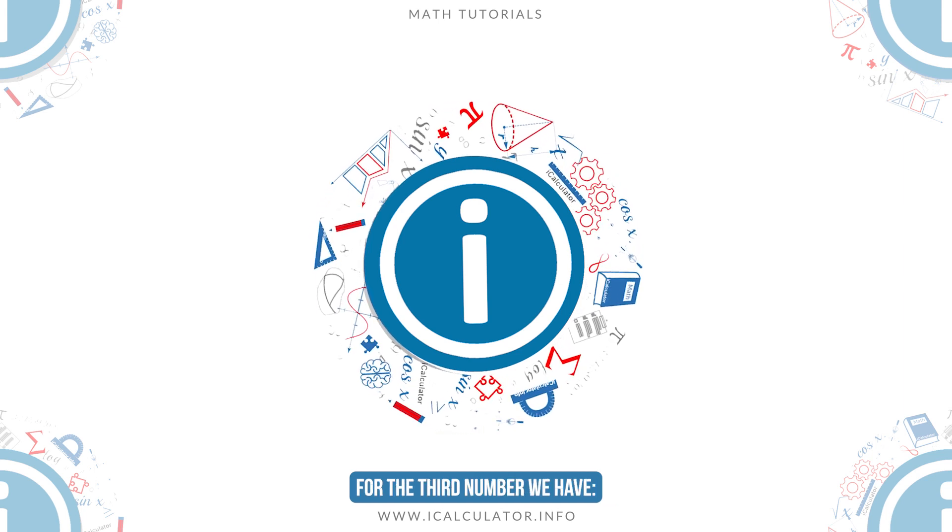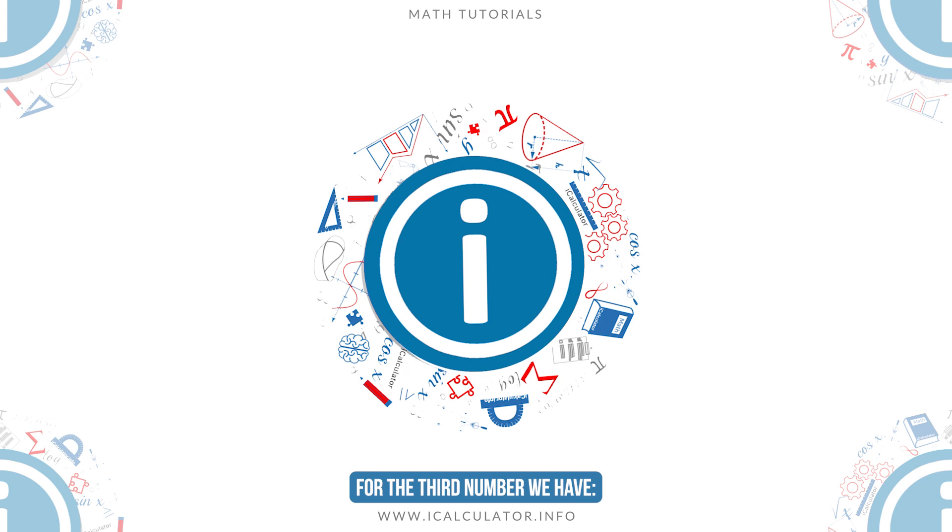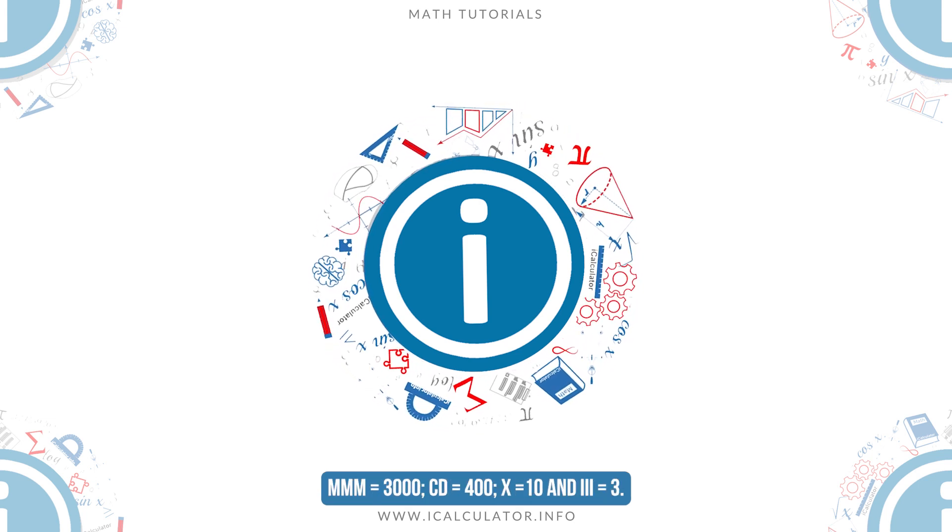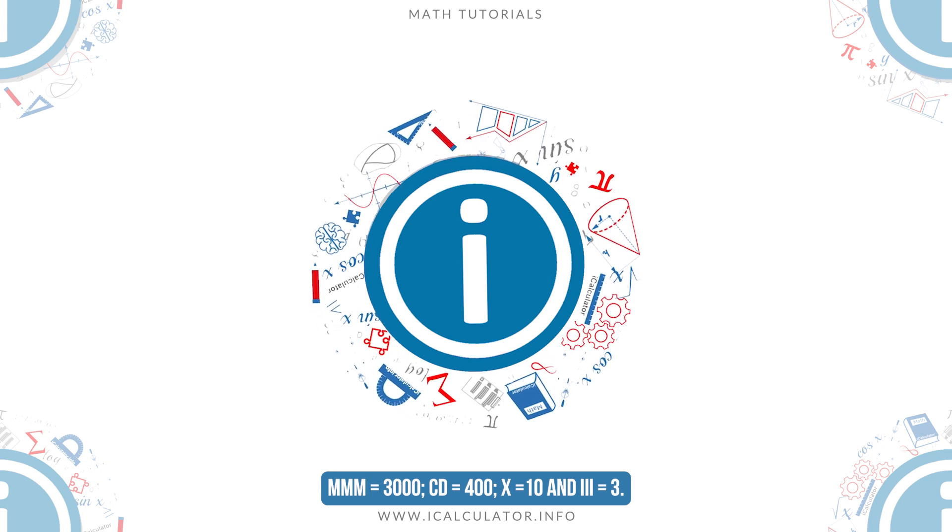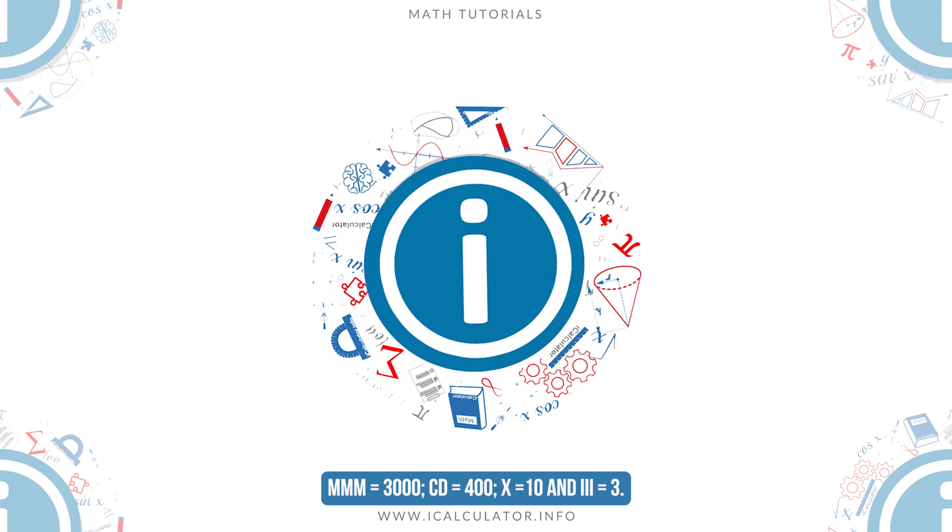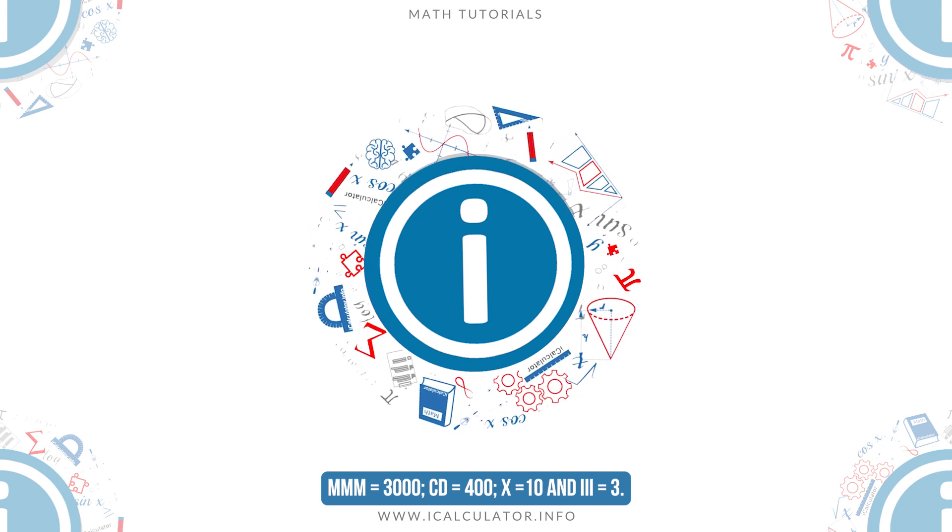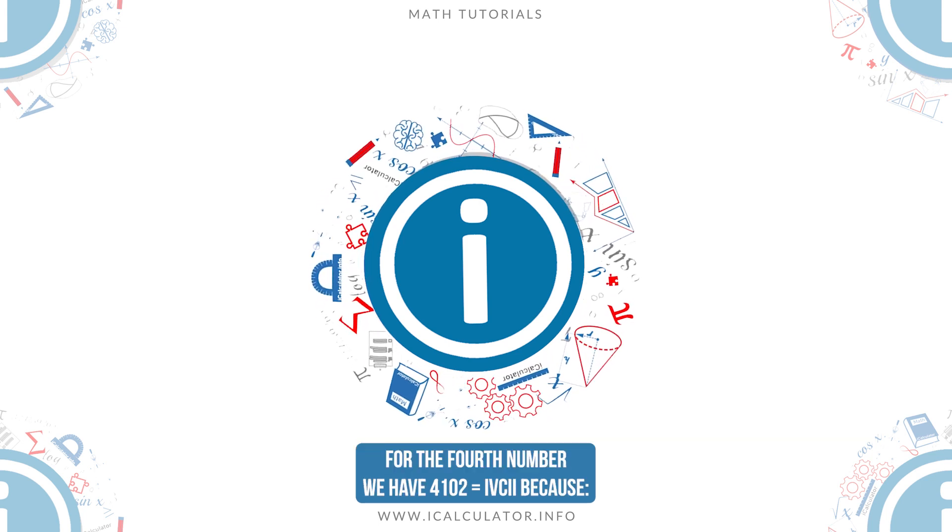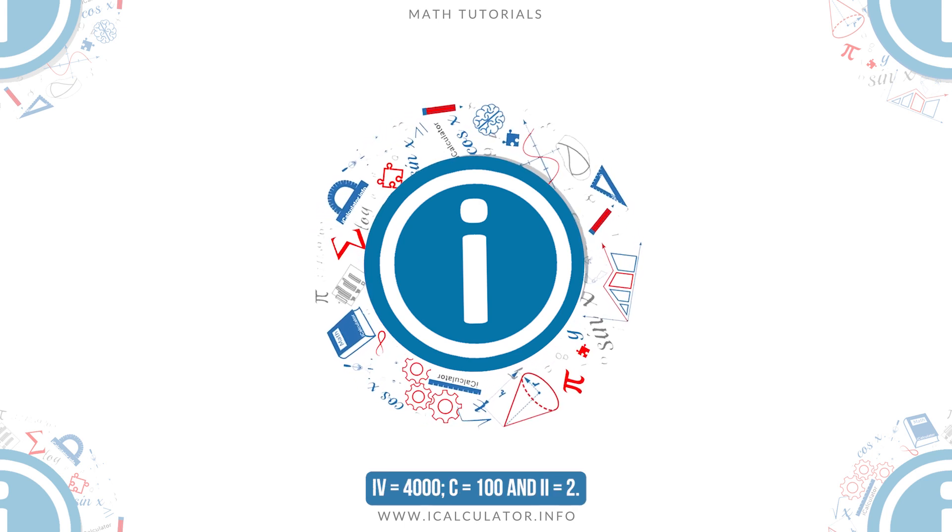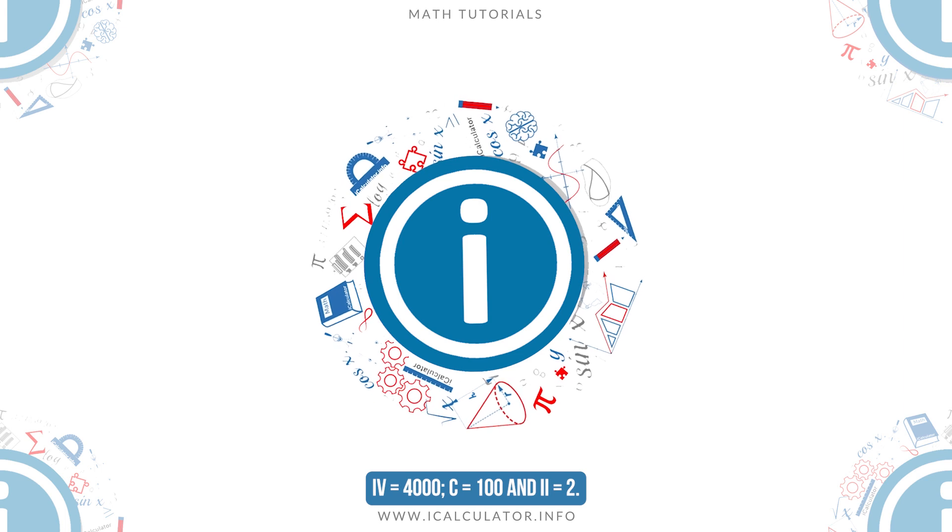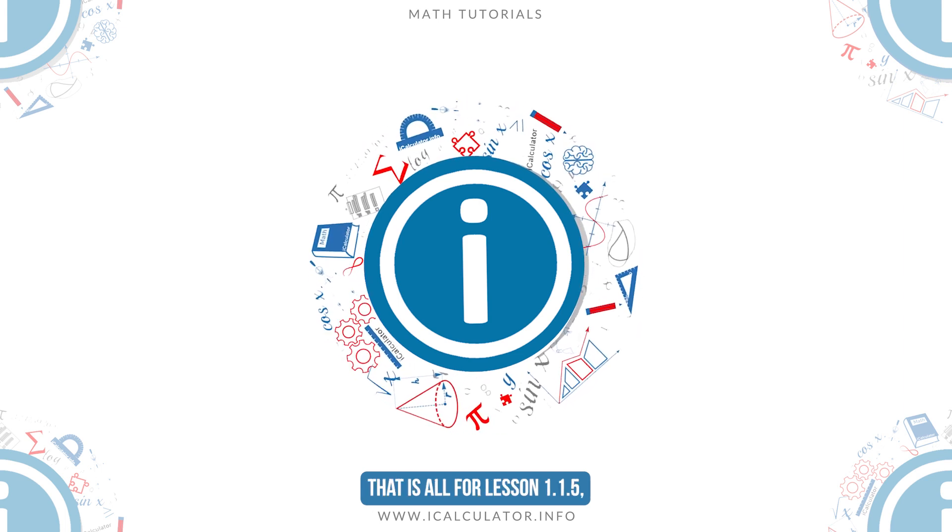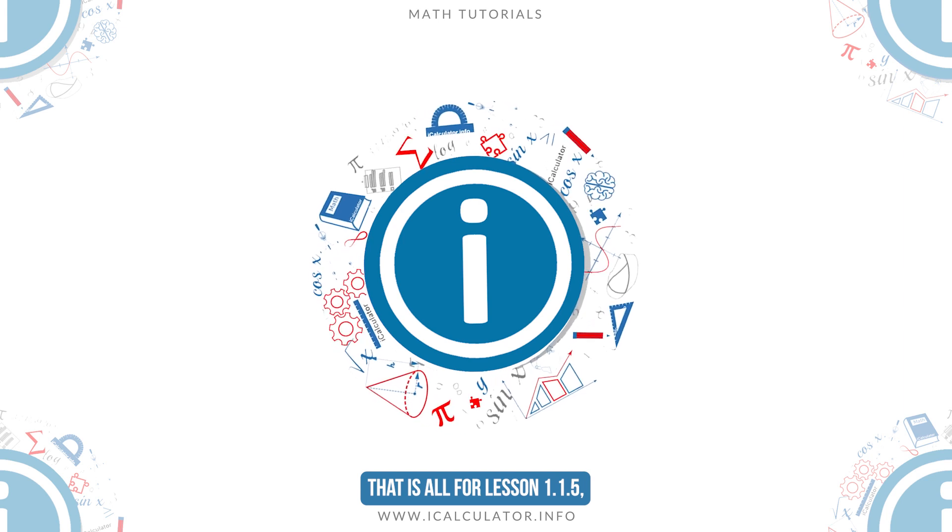For the third number we have 3,413 equals MMMCDXIII, because MMM equals 3,000, CD equals 400, X equals 10, and III equals 3. For the fourth number we have 4,102 equals IVCII because IV equals 4,000, C equals 100, and II equals 2.